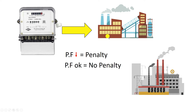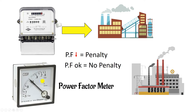A question may arise: how do we know if the power factor of our home is correct or not? To find this, simply connect a power factor meter in your home. After connecting it, if you see that power factor is less than 0.9, you need to improve it. If power factor is 0.9 or 1, there is no need to correct it.